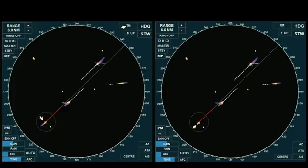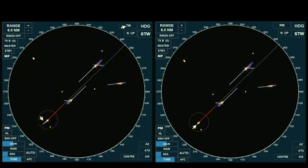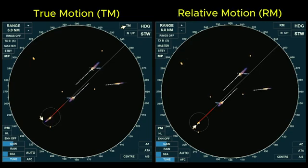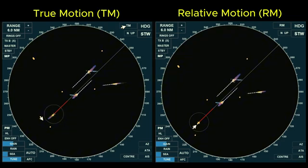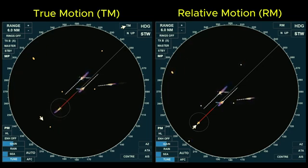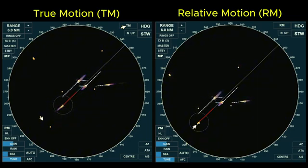Let's compare the movement of the displayed objects in true motion and relative motion displays. On the left screen, the radar is set to true motion, while on the right, it is set to relative motion. The most commonly used setting on board is relative motion, where own ship appears stationary. However, the display setting depends on the user's preference for a specific situation. It's important to note that, according to certification standards, the primary function of radar is for collision avoidance, detecting vessels, assessing collision risks, and assisting in safe maneuvering as required by COLREGS.